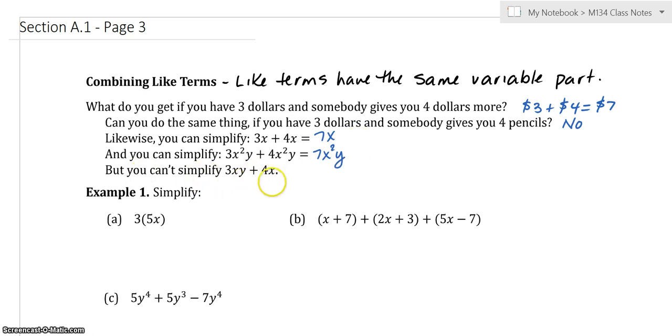But you cannot simplify this, right? They do not have the same variable parts. This has this extra y. That is only done for addition or subtraction. Multiplication can have different variables. We do it all the time.